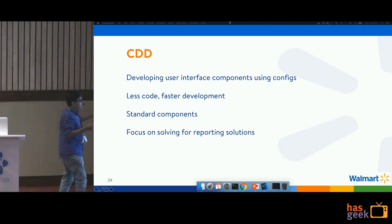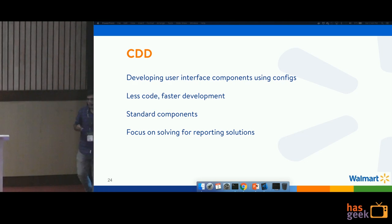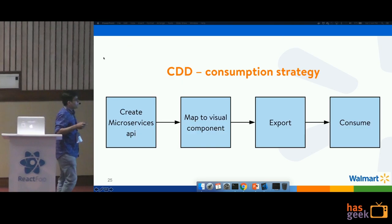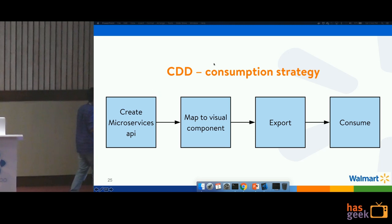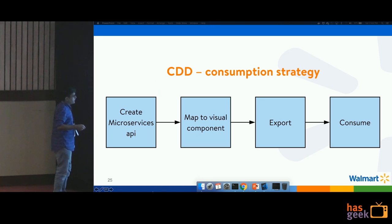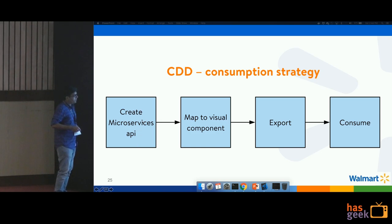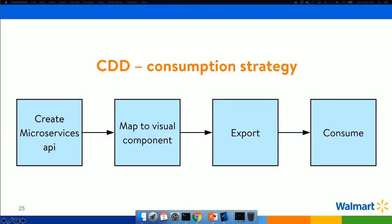Creating the standard set of components is one part — the other is how you use these components in your codebase. You have a microservices API created for your application and you map that API to a visual component, such as a bar chart, pie chart, line chart, or any other chart. You then export that code snippet and consume it in your project.